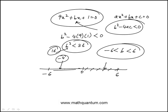So b has to fall between -6 and 6, and you have to exclude the values of -6 and 6, because in that case it would be equal to 0 and there will be a real solution. So the answer is -6 < b < 6, which is answer choice D.